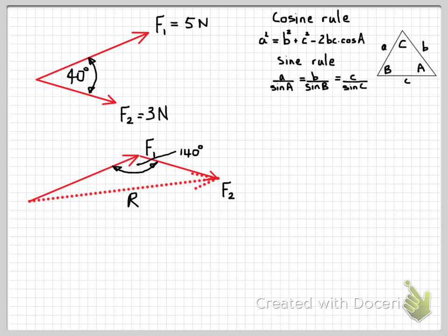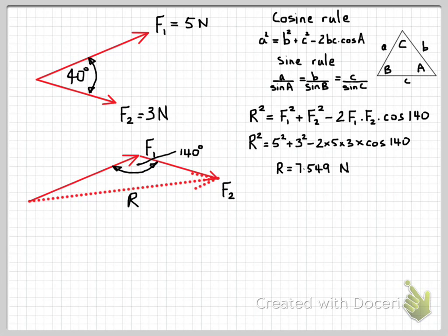So we now have the length of two sides and the angle between those two sides. So we can now use our cosine rule to calculate the resultant force. So having written out the equation, we can now put in the values that we were given and have worked out. And if we do the calculations, we'll find that the resultant force is 7.55 newtons.